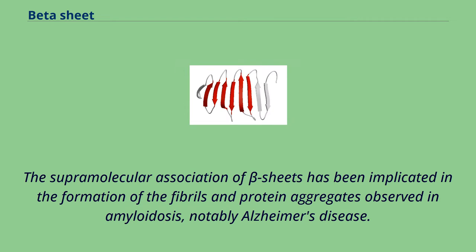The supramolecular association of beta sheets has been implicated in the formation of fibrils and protein aggregates observed in amyloidosis, notably Alzheimer's disease.